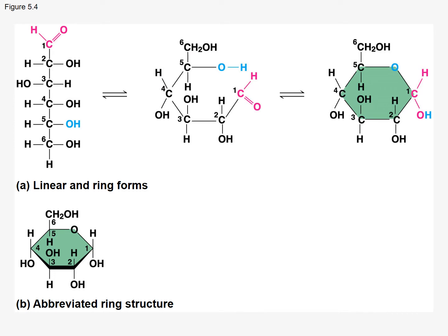Let's look at how a ring forms. We've been looking at the linear structure of carbohydrates. This is an example of a hexose aldose — it's actually glucose. It's important to know that in most biological systems, especially if water is present, glucose is going to be found in the ring form greater than 99% of the time. It's very rare that glucose is found in the linear form.